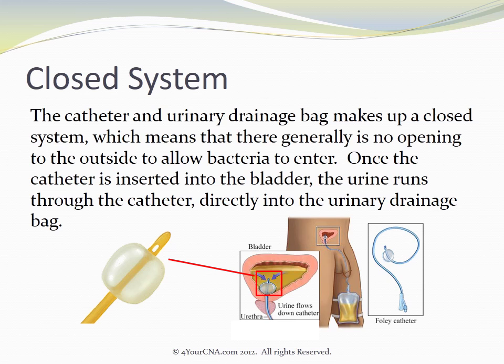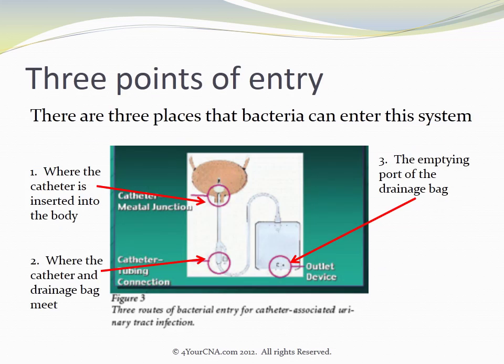Once the catheter is inserted into the bladder, the urine runs through the catheter directly into the urinary drainage bag. There are three places that bacteria can enter this system: one, where the catheter is inserted into the body; two, where the catheter and drainage bag meet; and three, the emptying port of the drainage bag.